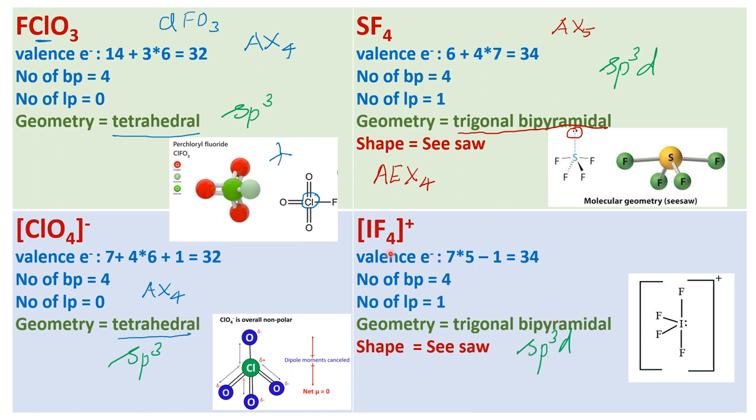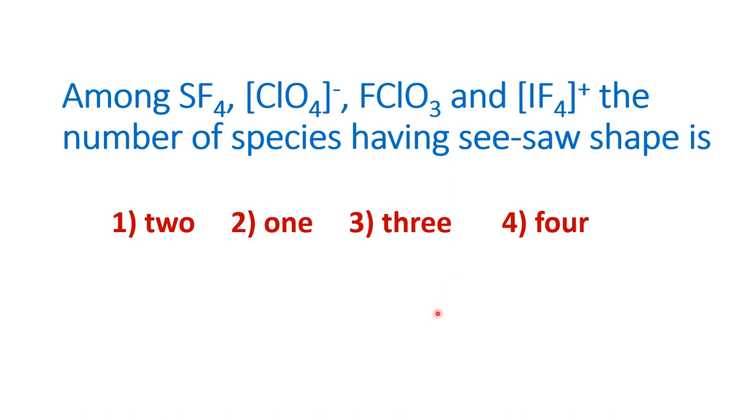Therefore, we see in this particular set of molecules, only two of them are having a seesaw shape whereas the other two are tetrahedral. The answer to this particular question is option one which is two.